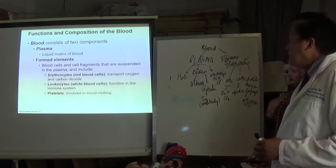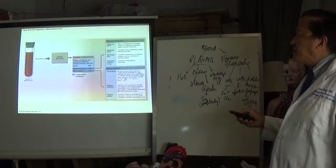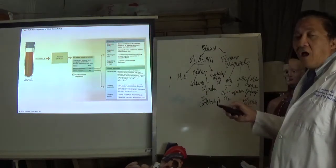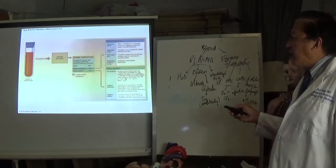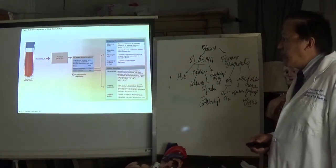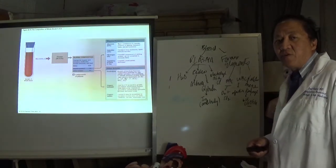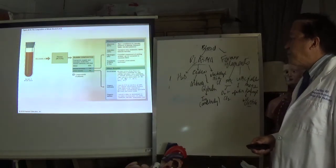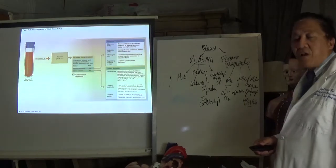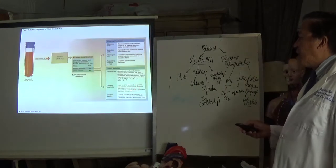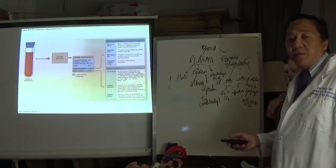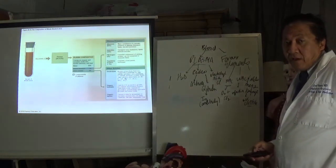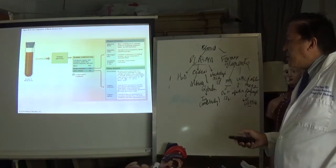Plasma is mostly water — 92 percent. Plasma proteins include albumin at 60 percent, globulins, fibrinogen, and other proteins such as enzymes and hormones. Hormones are produced by endocrine glands and, because of the absence of ducts, are released directly into the blood circulation. Electrolytes mentioned include calcium, magnesium, and potassium, plus nutrients needed for ATP production such as glucose, lipids, carbohydrates, and amino acids.